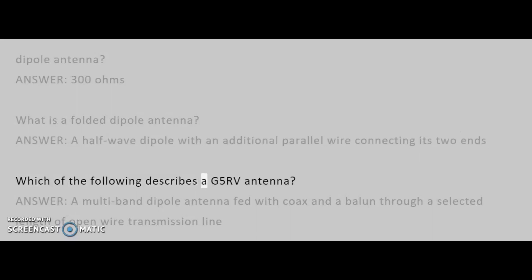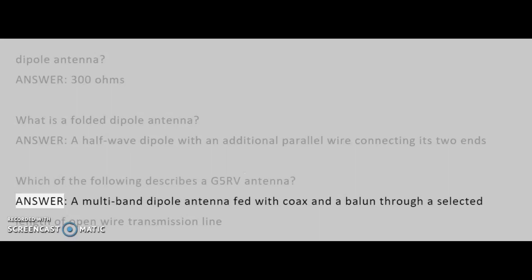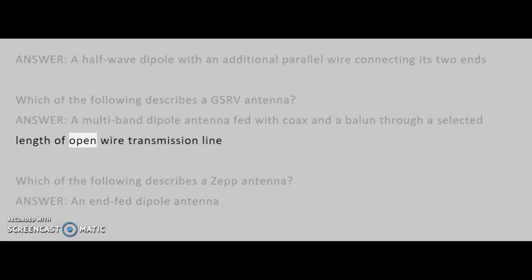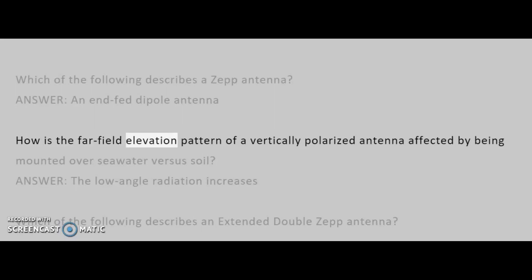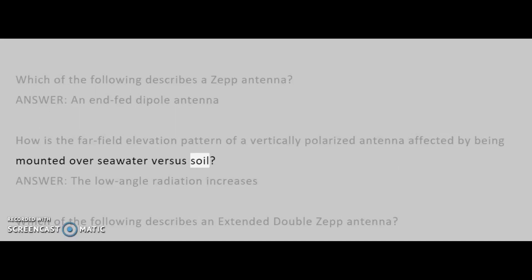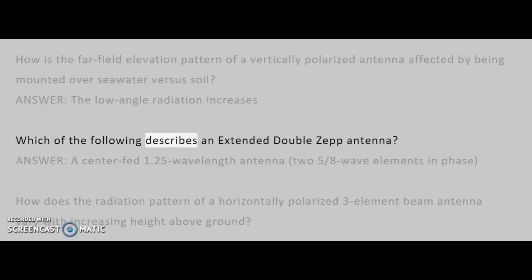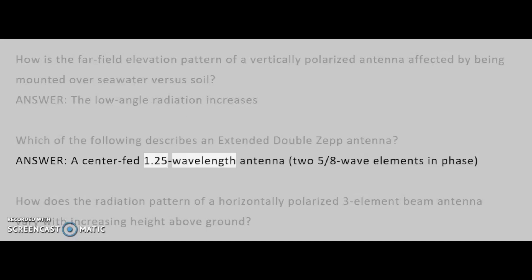Which of the following describes a G5RV antenna? Answer: a multiband dipole antenna fed with coax and a balun through a selected length of open wire transmission line. Which of the following describes a ZEP antenna? Answer: an end-fed dipole antenna. Which of the following describes an extended double ZEP antenna? Answer: a center-fed 1.25 wavelength antenna, two five-eighths wave elements in phase.